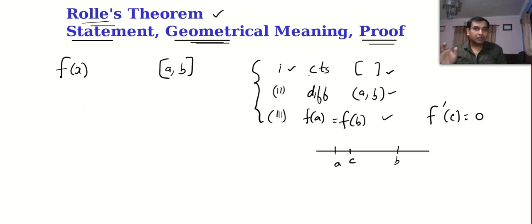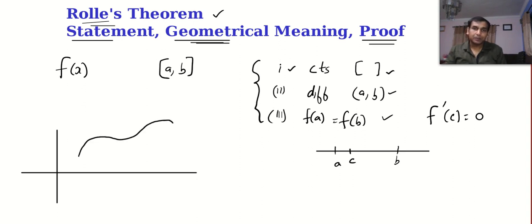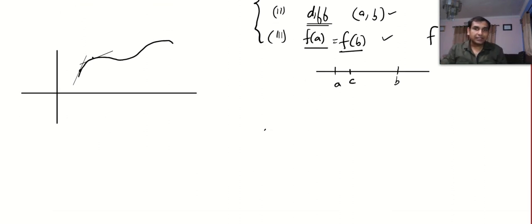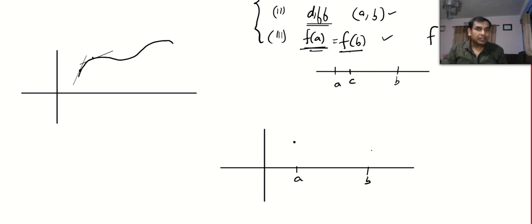Now let's go for the geometrical meaning. The word continuous means the graph of the function will exist without any break. Differentiable means the slope of the tangent exists — we can imagine a graph where the slope of the tangent at any point can be calculated. And f of a equal to f of b means: if a function is defined from a to b, then f of a is the height at a and f of b is the height at b, with coordinates a comma f of a and b comma f of b.